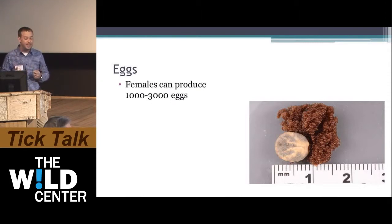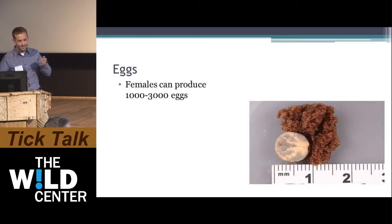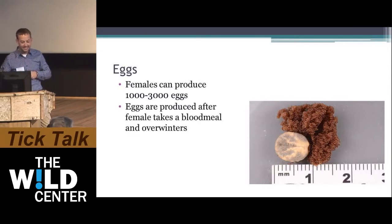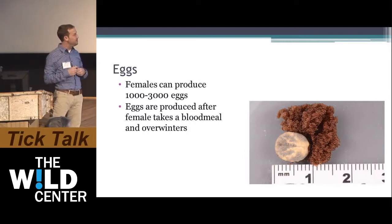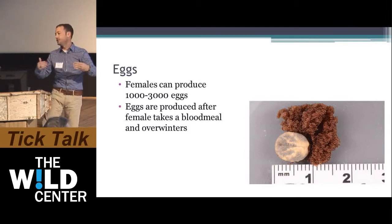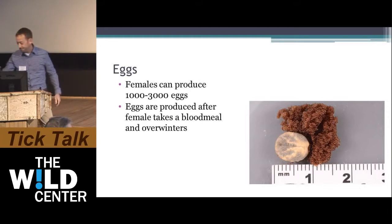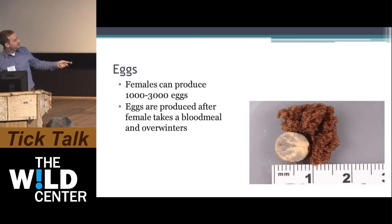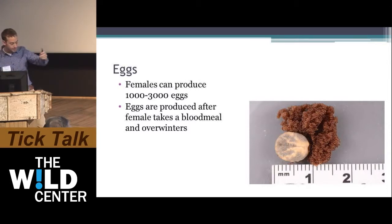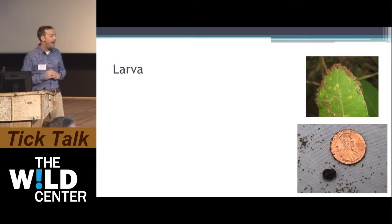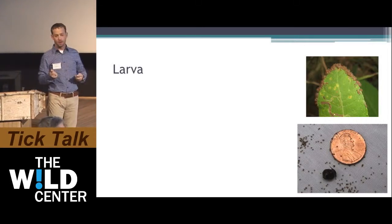A female tick can actually produce up to 3,000 eggs. The eggs are produced after the female takes a blood meal — they need that blood to have the energy to make all these eggs. It's important to note that they overwinter as fully fed females and then lay the eggs when the next season comes. After the egg hatches, you have the larva.